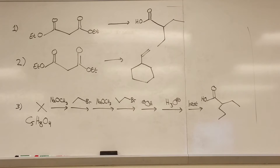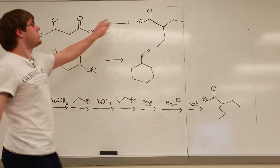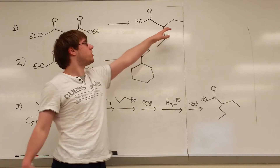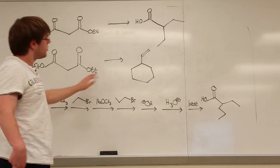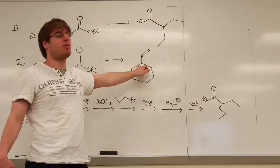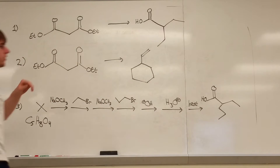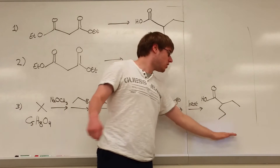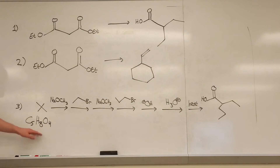Here are three practice problems on malonic ester syntheses. Question one: turn malonic ester into a carboxylic acid with a bunch of carbon groups on it. Number two: turn this malonic ester into a six-membered ring with a carbon-carbon double bond attached. For number three, you have to work backwards from a carboxylic acid structure through a series of reactions. Give those a try — pause the video if you want, otherwise let's start with number one.